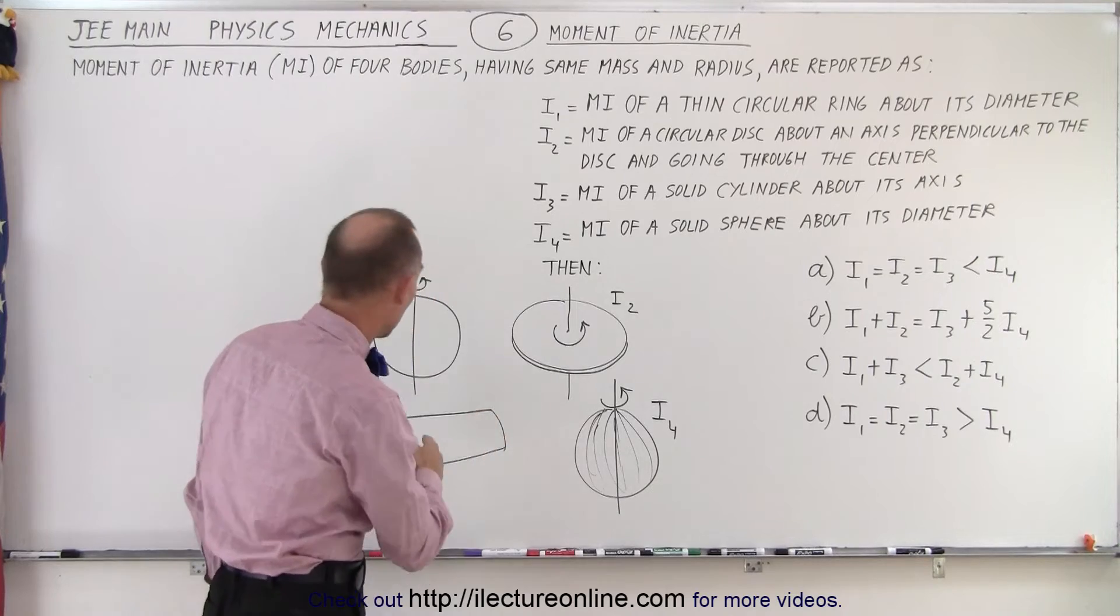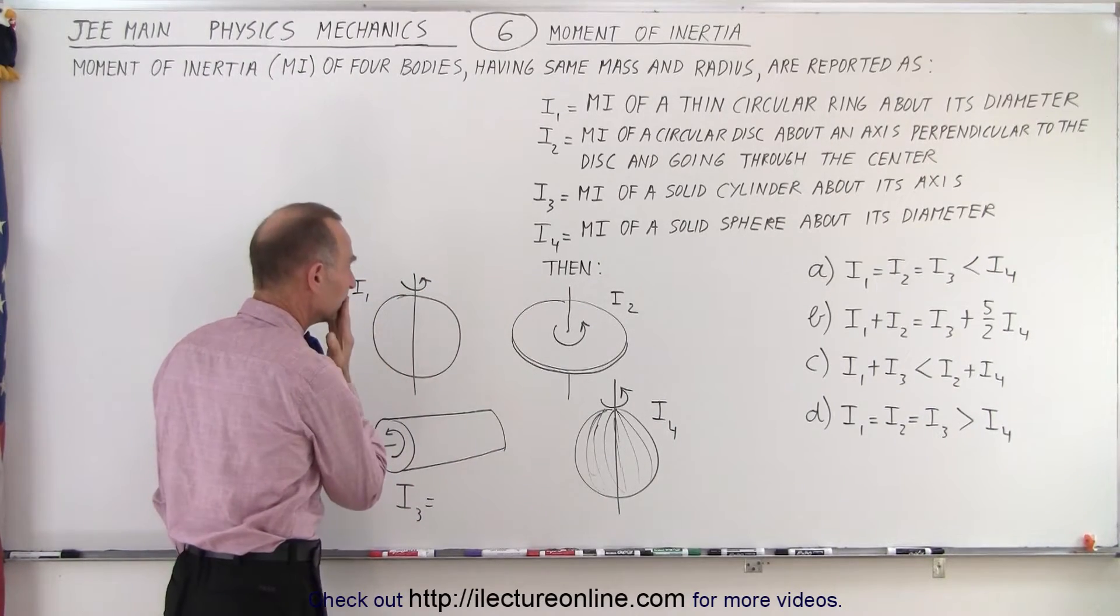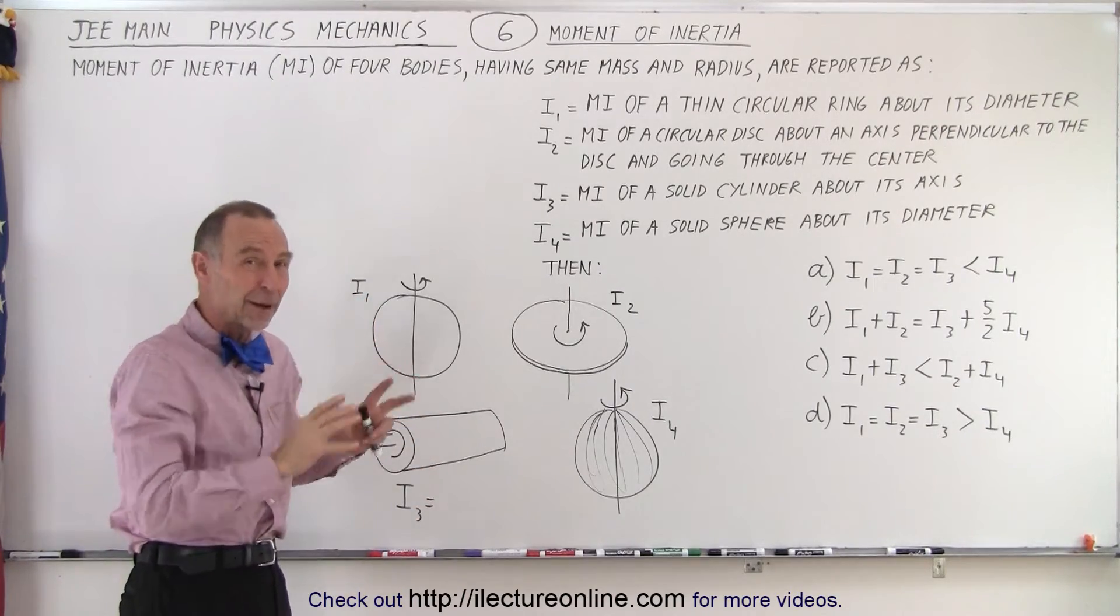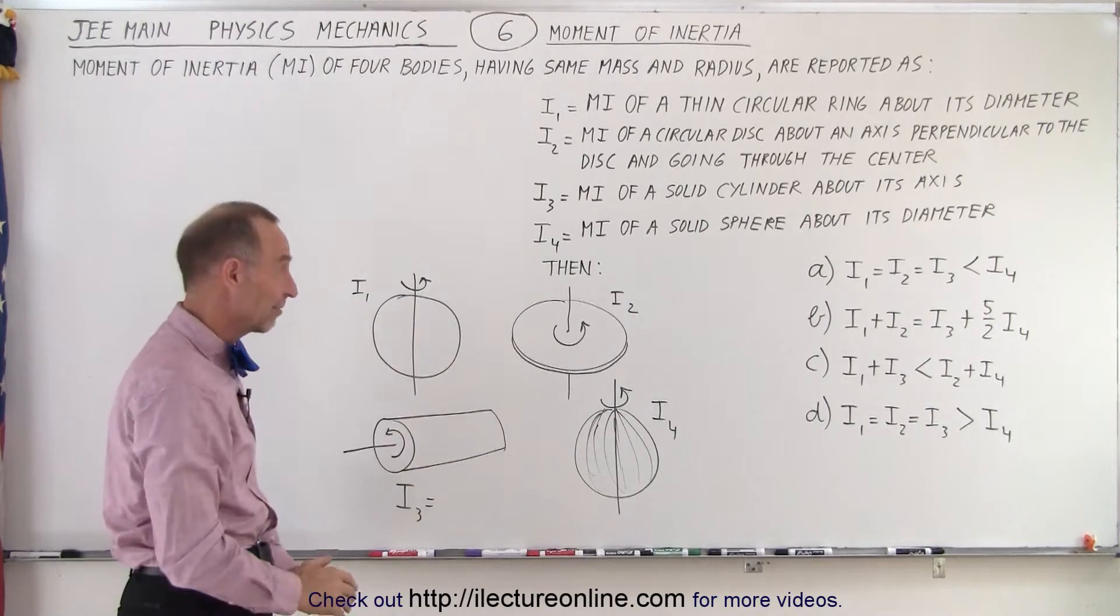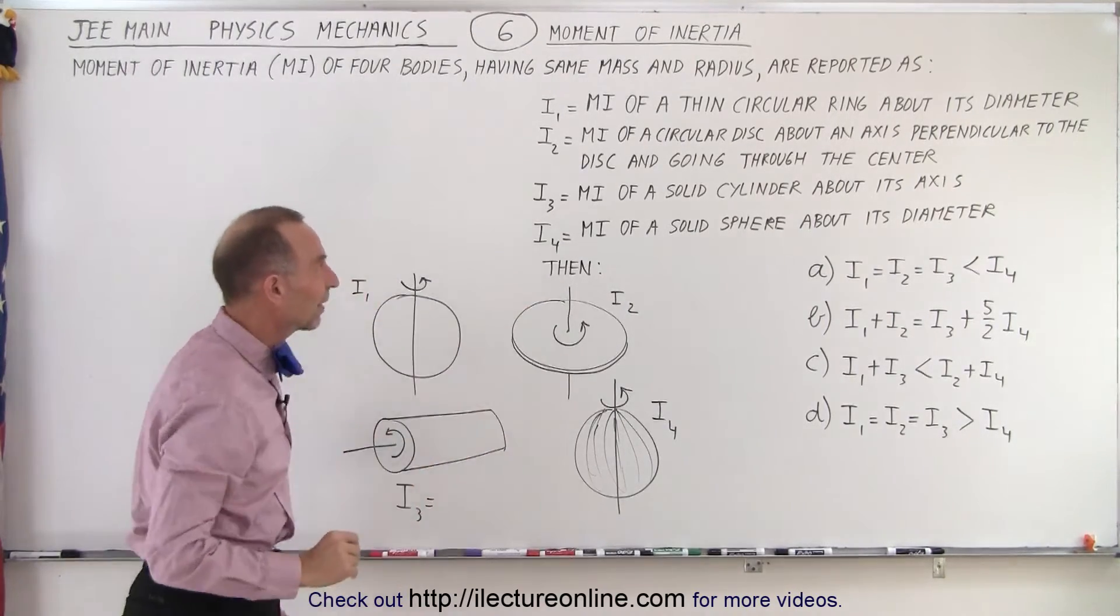First of all, the first one threw me a bit of a loop because I'm not familiar with that one and I haven't memorized that one - the moment of inertia of a thin circular ring about its diameter. I didn't know the moment of inertia. Now I can quickly calculate it, but that probably takes me about three minutes and that would be all the time I have available.